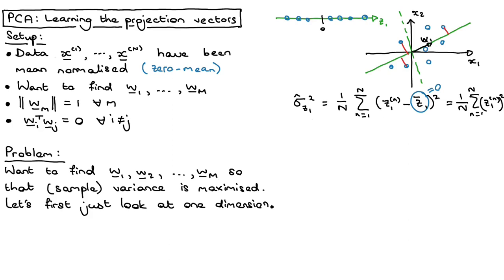From the previous video, we saw how we calculate the projection Z1N — it's simply the dot product of the data point with W1. So we can substitute that in: we get 1 over N, the sum from 1 to big N, of the dot product between W1, my projection vector, and each data point XN, all squared.